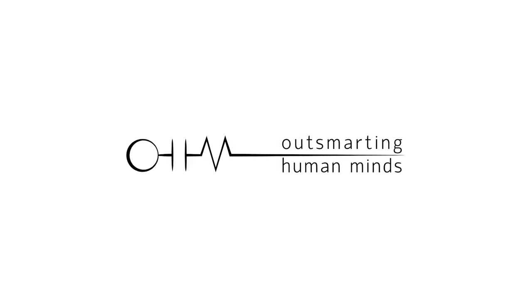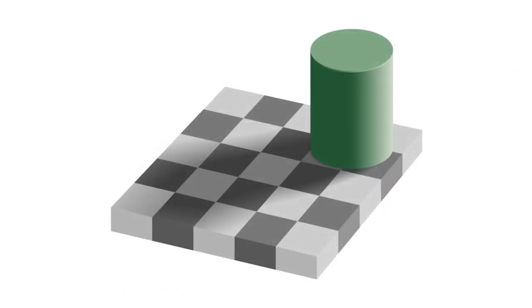Want to catch your brain making a mistake in real time? Take a look at this checkerboard created by vision scientist Edward Adelson. The squares labeled A and B are exactly the same shade of grey.